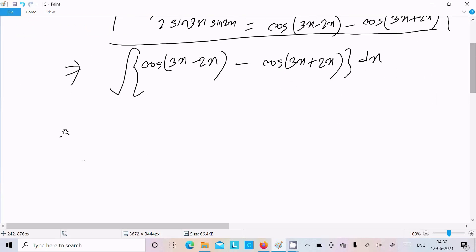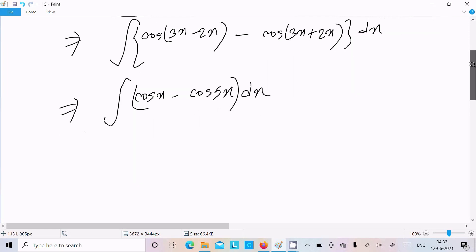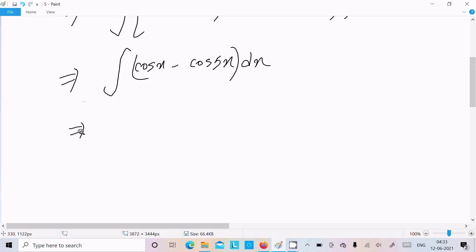Next is here integration symbol, cos(3x minus 2x) that is cos x, minus cos(3x plus 2x) that is cos 5x, here dx. Thereafter let's do the separation, so here we can write cos x minus cos 5x dx.